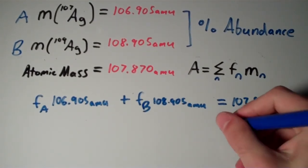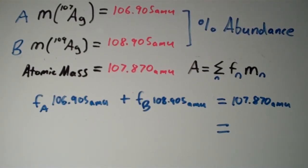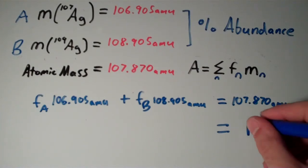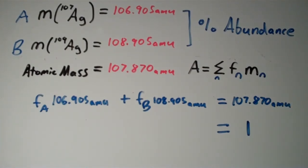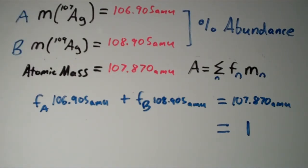The other equation that I'm going to use involves just a simple observation. Since there are only two naturally occurring isotopes of silver, if I add the fractions of these two isotopes together, won't that be one? Yes, it will. In other words, if I add the percent abundance of each of these two isotopes together, then that will give me 100%. So if I add the fractions together, that will give me just one.